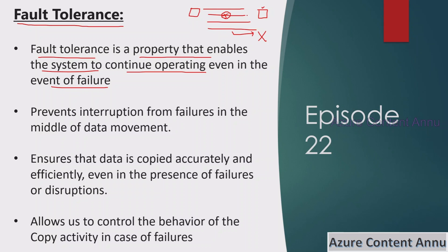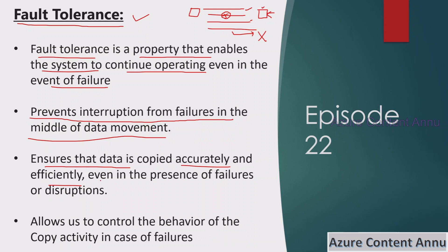In such cases, even the good data is not able to land into the sink. To tackle this problem, we have something called fault tolerance in copy activity. It prevents interruption from failure in the middle of data movement and ensures that data is copied accurately and efficiently even in the presence of failure or disruptions. By having this option, we can control the behavior of copy activity in case of failure.